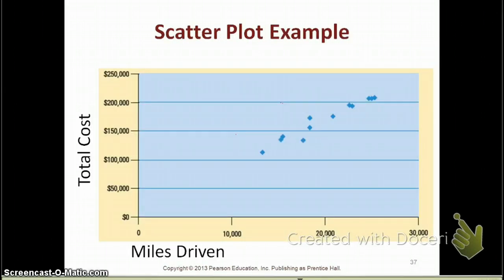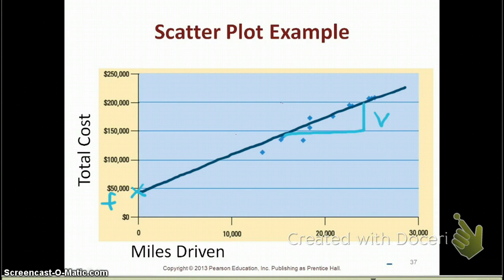This is what a scatterplot looks like. You have your total cost on your y-axis, and this particular example has miles driven on your x-axis. When you're using a scatterplot, you look at all your data points, and then you draw a line that you think is your best fit. The point at which the graph intercepts is your fixed cost. The slope is your variable cost per unit.